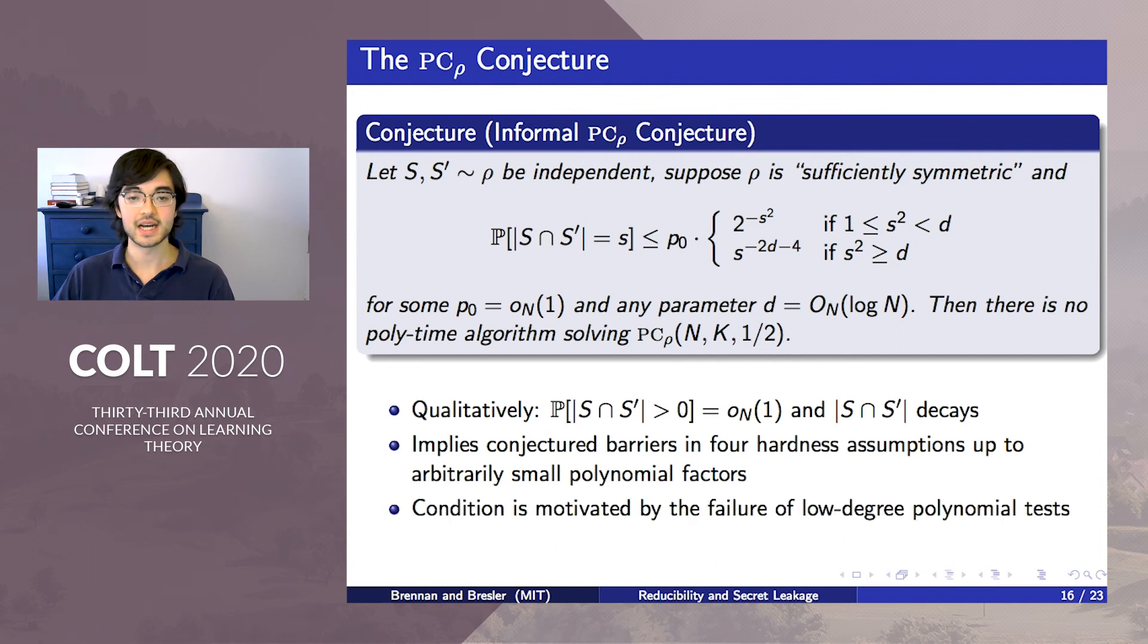This decay condition comes from analyzing when low-degree polynomial tests fail to solve PC-rho. We predict that an additional symmetry assumption on rho may be necessary for this conjecture to hold in general. However, the four rows corresponding to our variants of PC all are sufficiently symmetric that the predictions in this conjecture match what we believe to be the right computational barriers in each of those problems.